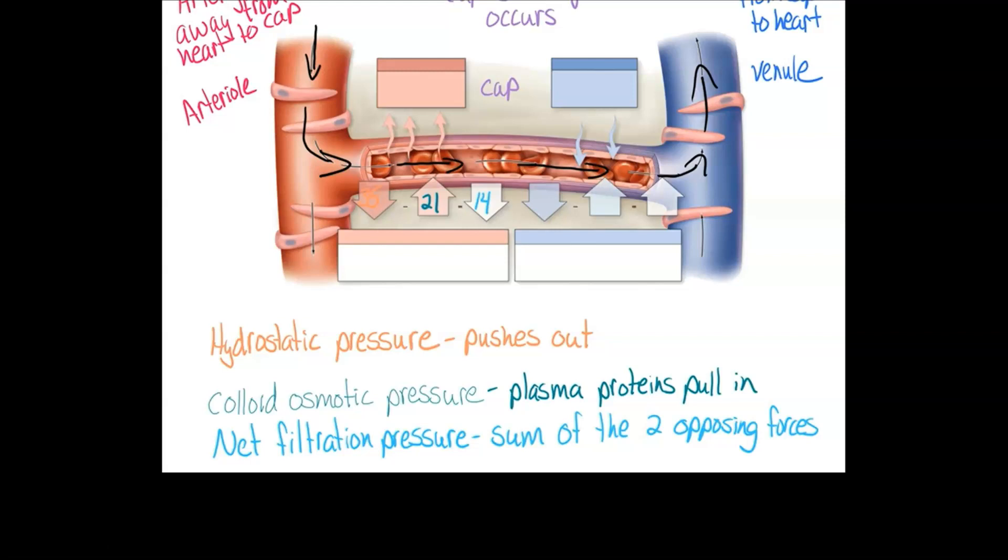So you have a net filtration pressure of 14. This means that in the arterial end of the capillary, filtration occurs. Since hydrostatic pressure pushing out is greater than colloid osmotic pressure pulling in, you have a net movement of fluid along with the nutrients and oxygen and hormones moving out of the capillary and into the tissues. This is how you deliver your nutrients and oxygen.